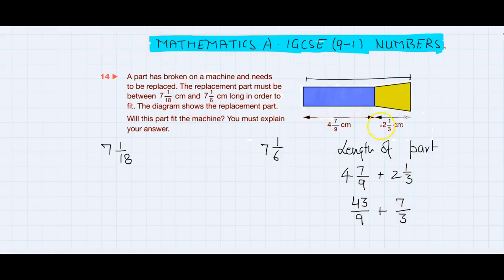In order to add them, our denominators must be the same. This is 9, this is 3. So we have to multiply this denominator and numerator by 3. Common denominator is 9. So this is 43 plus 21. That will be 64/9.